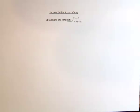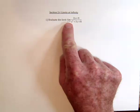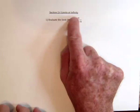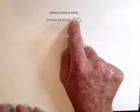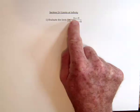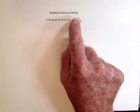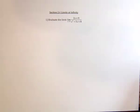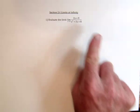Limits at infinity means that either the x is approaching positive or negative infinity, or the function itself is approaching positive or negative infinity. In this case, it's the x that's approaching infinity. When that happens and the x is going to either positive or negative infinity, there are a couple of ways to approach this.